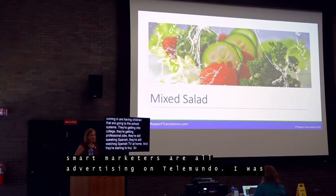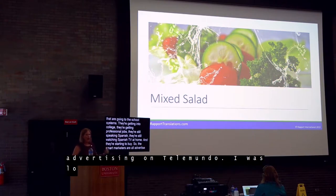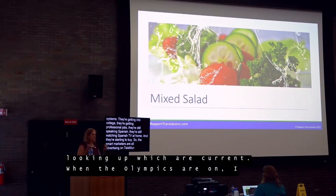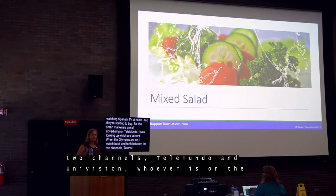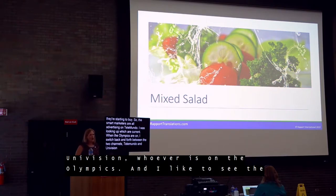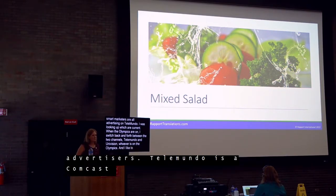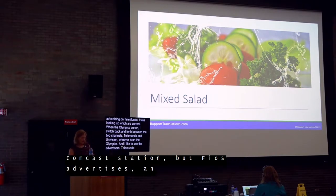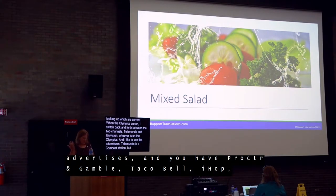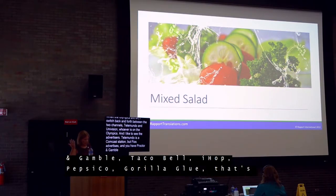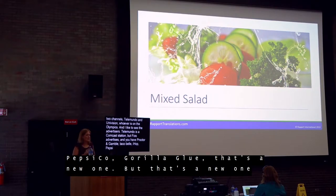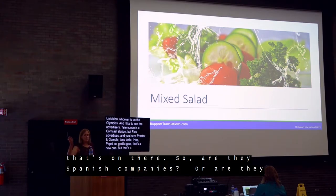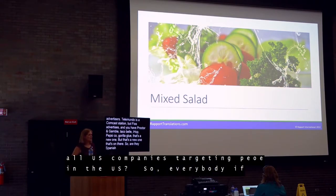The smart marketers are all advertising on Telemundo. When the Olympics are on, I switch between Telemundo and Univision to see what advertisers are on there. Telemundo is a Comcast station, and you have companies like BIOS, Procter & Gamble, McDonald's, Jack in the Box, Taco Bell, IHOP, Toyota, Pepsi, Coke, OxiClean, and Gorilla Glue. Are they Spanish companies? No — they're all US companies targeting people in the US.